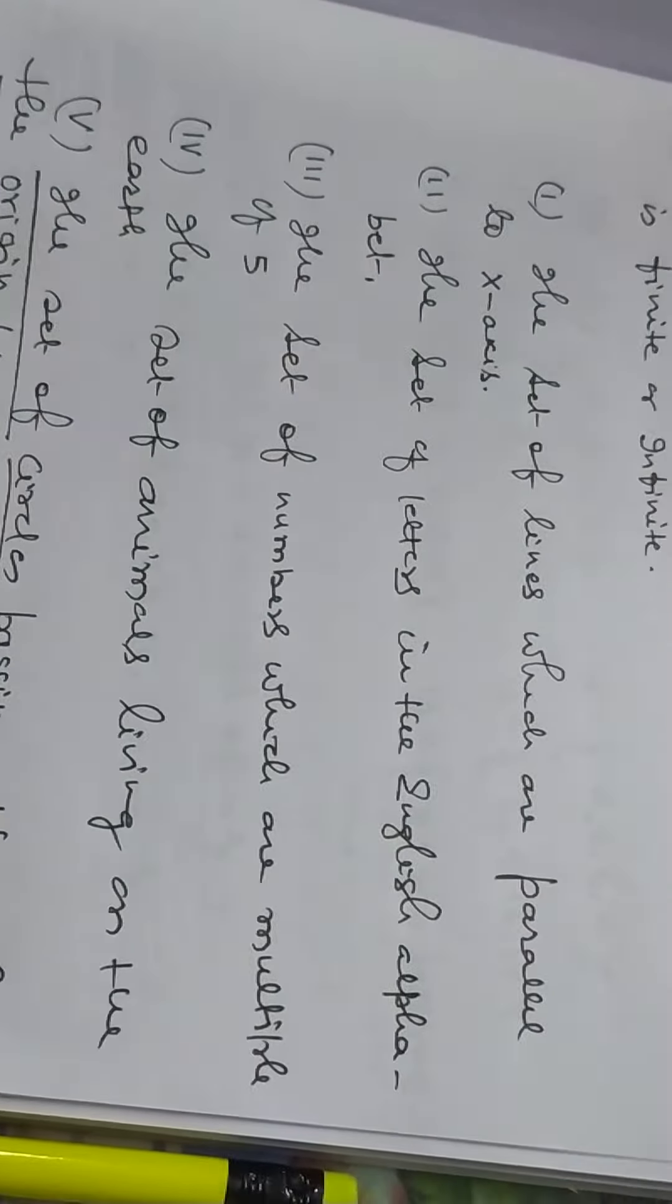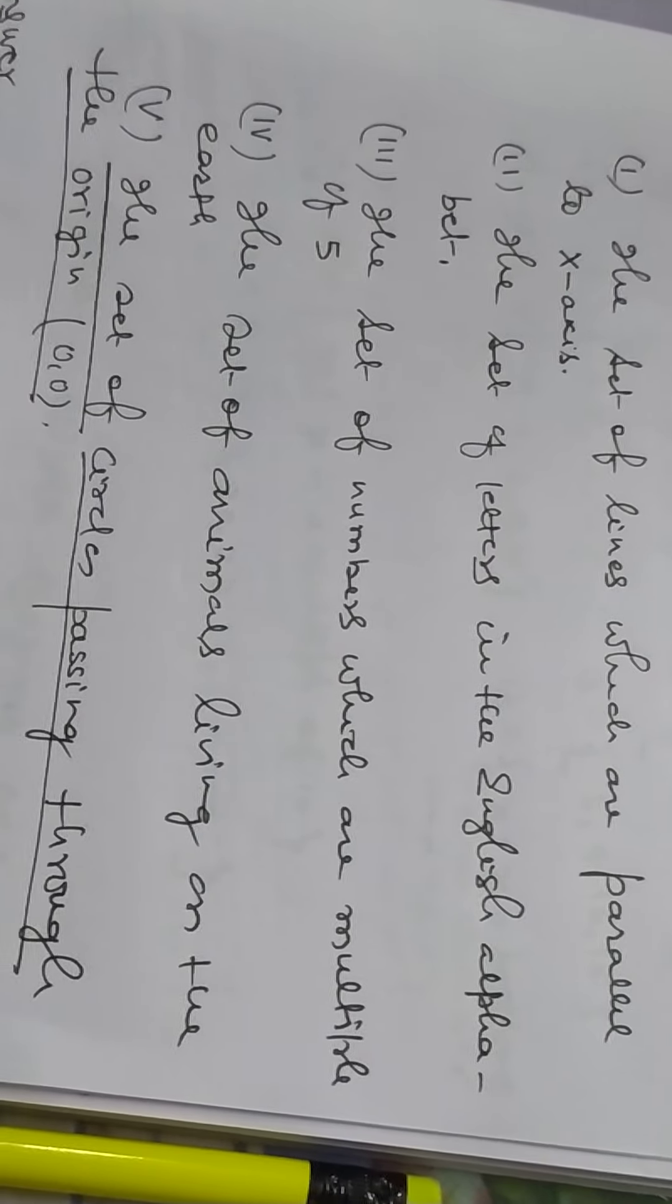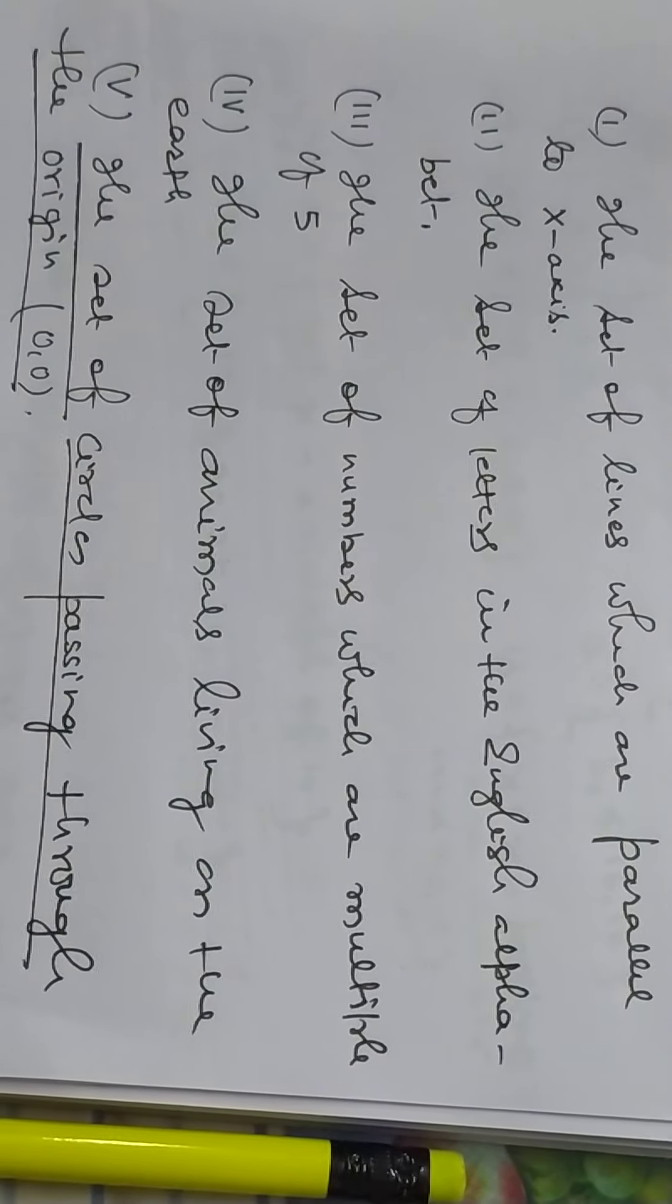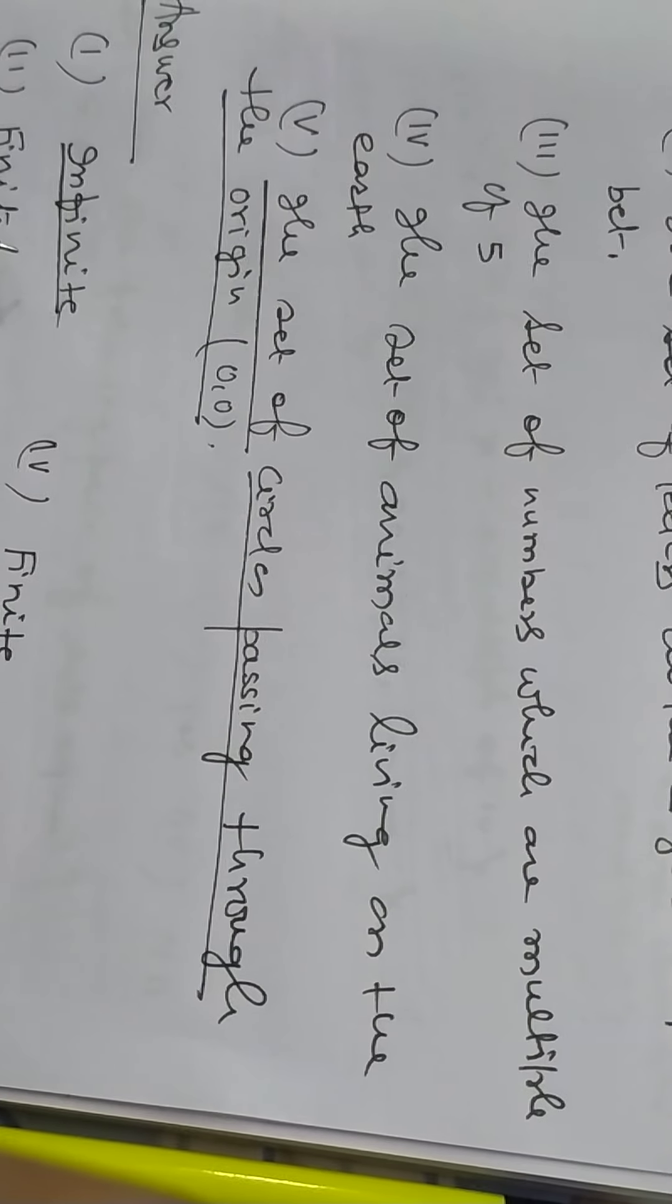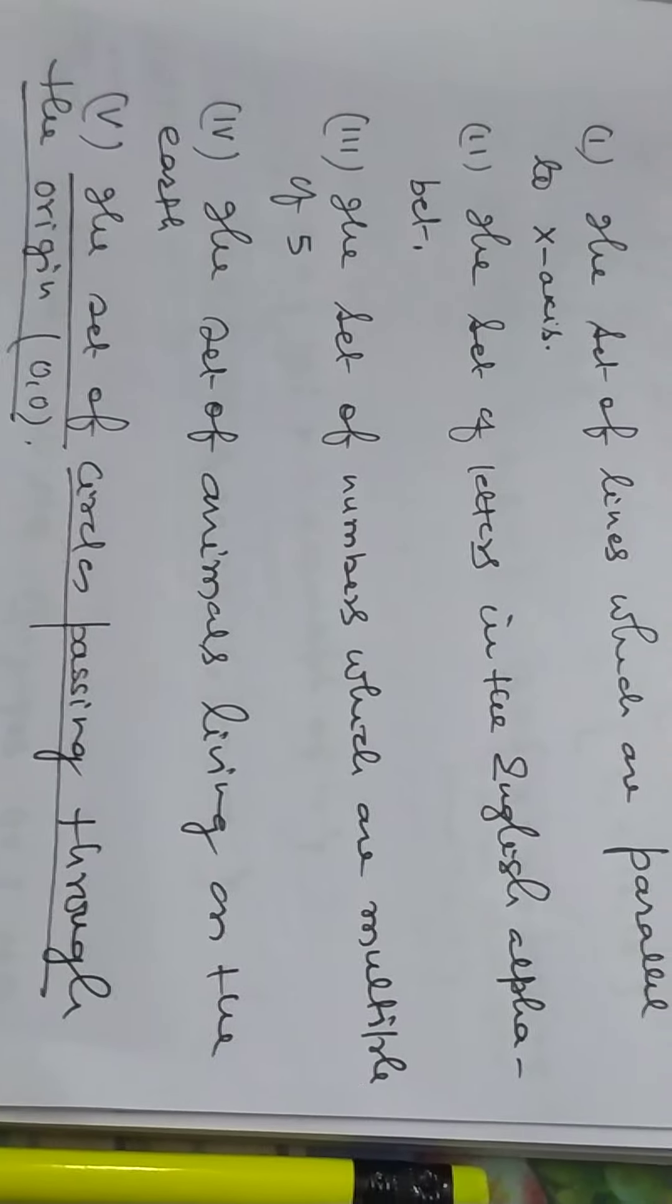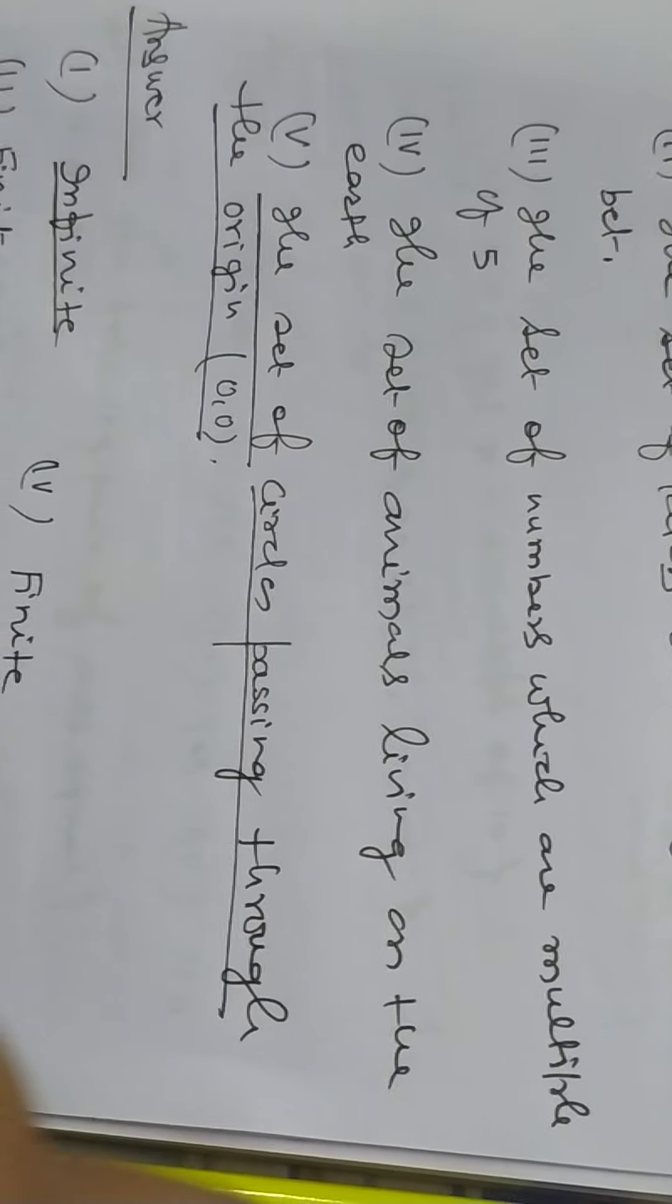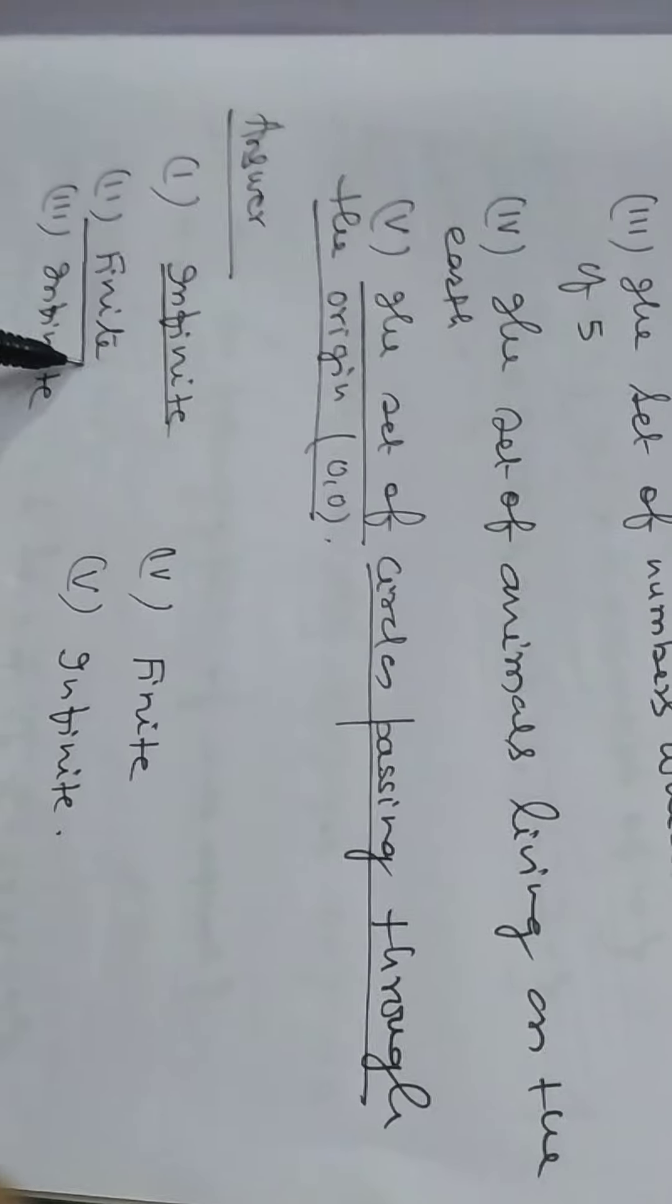The set of lines which are parallel to x-axis is infinite. There are so many lines which are parallel to x-axis. Second, the set of letters in the English alphabet, this is finite, finite set.